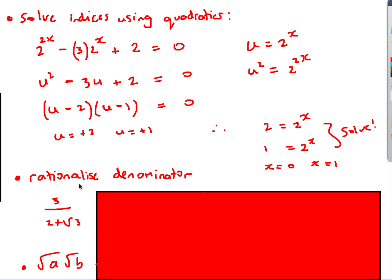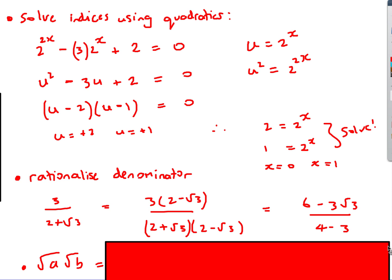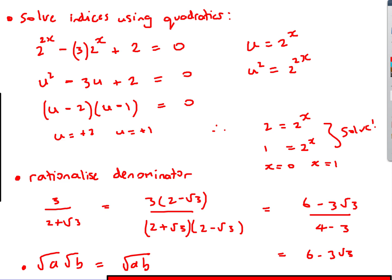Second question: rationalizing the denominator — getting rid of surds on the bottom. The trick is to multiply by the conjugate. If the denominator is 2 + √3, multiply top and bottom by 2 − √3. The middle terms cancel: 2√3 and −2√3 disappear, and √3 × −√3 = −3, giving denominator 4 − 3 = 1. So we get 6 − 3√3.